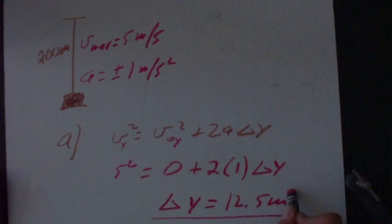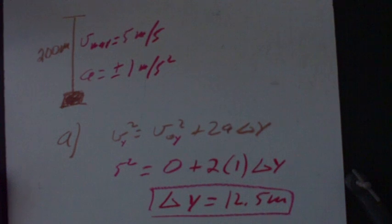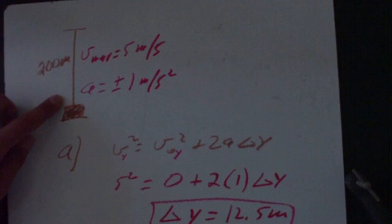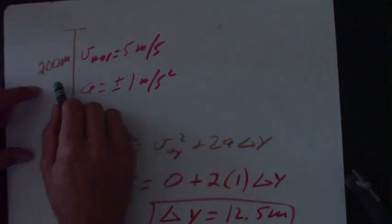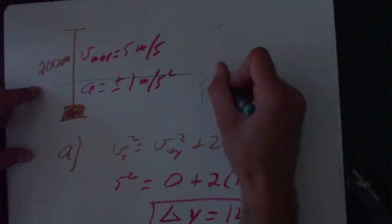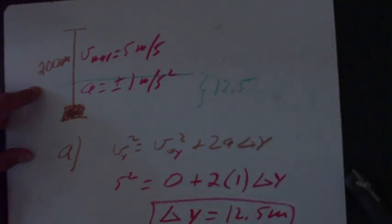So the elevator will require 12.5 meters to go from zero to one meter per second. Now we actually learned quite a bit about the problem just through that one number because I can return to the original figure. It starts at rest here, and this represents 12.5 meters. So the elevator requires this first 12.5 meters to reach its maximum speed.